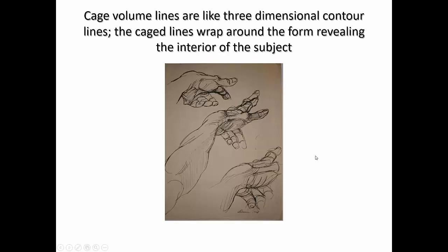But Cage Volumes differ in the sense that they are three-dimensional contour lines. The Cage Volumes actually wrap around the form, revealing the interior of the subject.